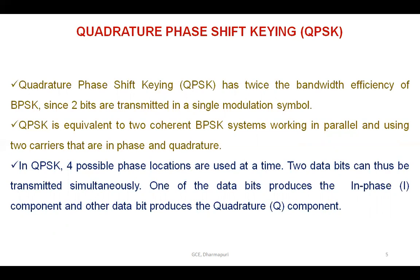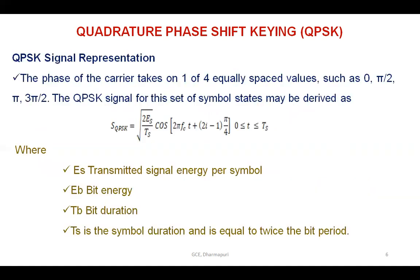In QPSK, four possible phase locations are used; at a time two data bits can be transmitted simultaneously. One of the data bits produces the in-phase component and the other produces the quadrature component. The phase of the carrier takes one of four equally spaced values: 0, π/2, π, and 3π/2. The QPSK signal energy per symbol Es equals twice the bit energy Eb, and the symbol duration Ts is equal to twice the bit duration Tb.